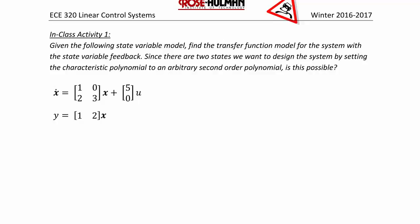In class activity 1: given the following state variable model, find the transfer function model for the system with state variable feedback. Since there are two states, we want to design the system by setting the characteristic polynomial to an arbitrary second-order polynomial. Is this possible? Well, first we need to find the transfer function.